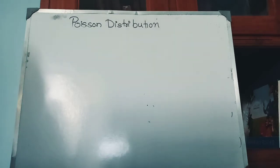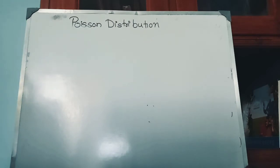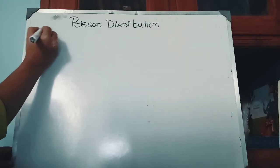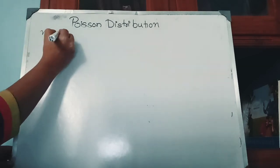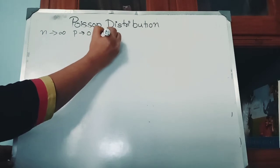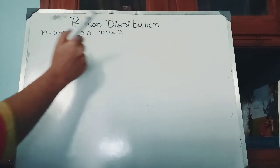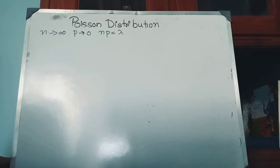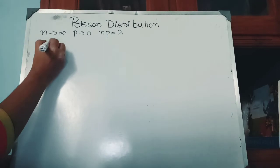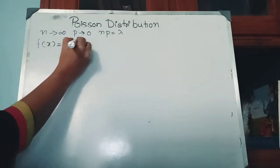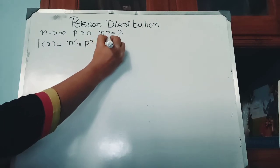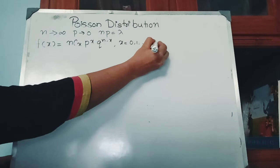Now we will explain the relation between Poisson distribution and binomial distribution. Poisson distribution is a limiting case of binomial distribution when n tends to infinity and p tends to 0, with np = λ. That is, binomial distribution tends to Poisson distribution when n → ∞, p → 0, and np = λ, where λ is the mean of the Poisson distribution. We start with the PDF of binomial distribution: f(x) = nCx · p^x · q^(n−x), where x is from 0 to n.